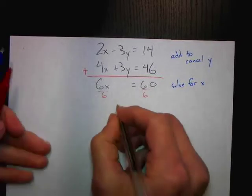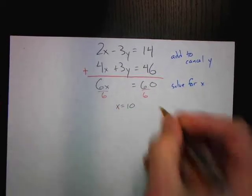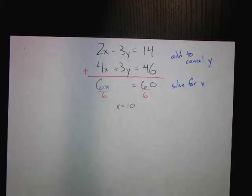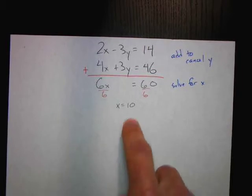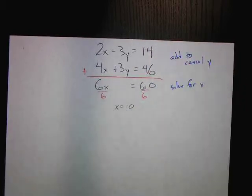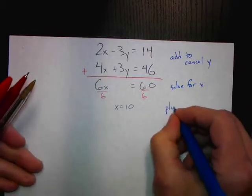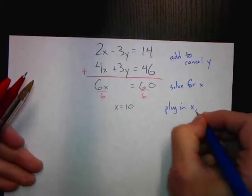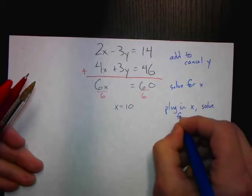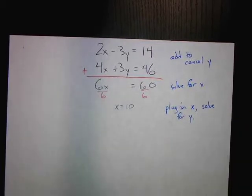We divide both sides by 6 and find out that x equals 10. Once we know x equals 10, remember that's only one of the coordinates — the solution is an ordered pair. We can plug x equals 10 back into either of the two original equations to find out what y would be.